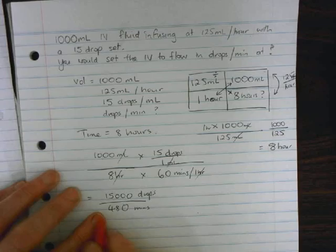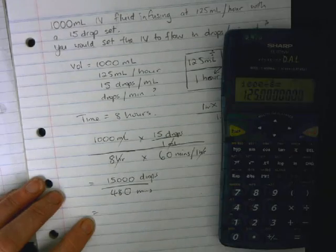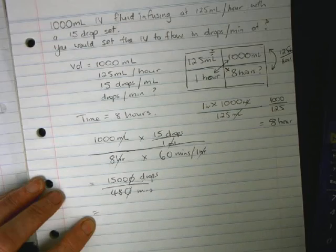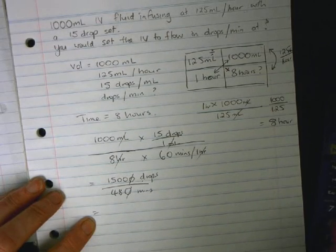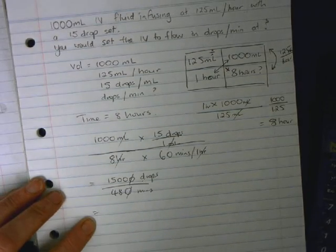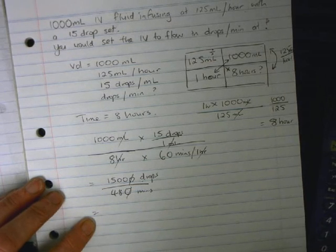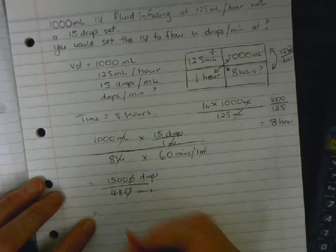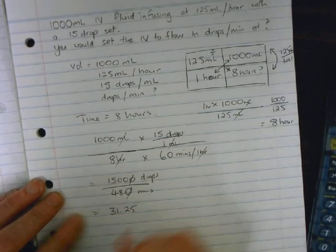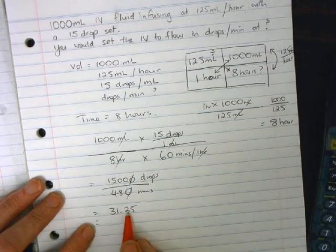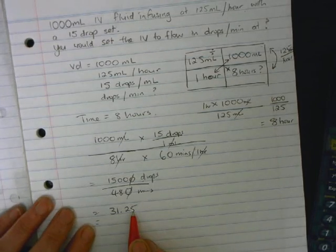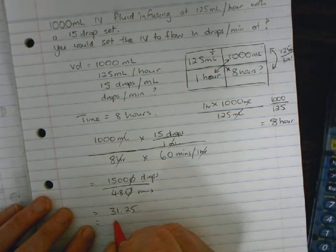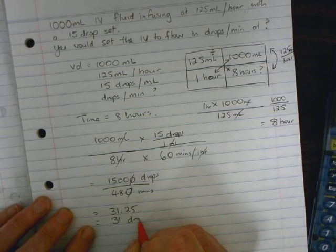Work out what that is - cancel a couple of zeros to make it easier. 31.25. So we're not going to leave it at 0.25 because you don't get a quarter of a drop. Because it's less than 5, we drop the 0.25 off and it's just 31 drops per minute.